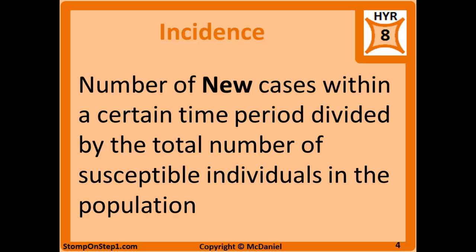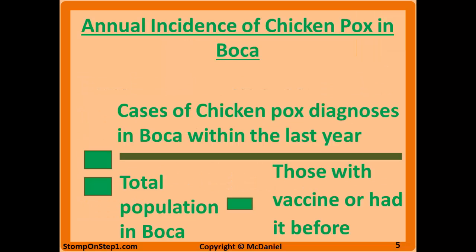The definition of susceptible will change depending on whatever disease you're talking about. For example, if a disease has an effective vaccine, anybody who's been vaccinated would not be susceptible, so you would remove them from the equation. For annual incidence of chicken pox in Boca, that would be new chicken pox diagnoses in the last year divided by the total population minus those who've already had chicken pox or received the vaccine, since you can only get chicken pox once.